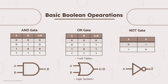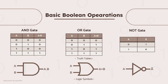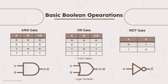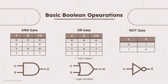Logic gates, such as AND, OR, and NOT, are the building blocks of Boolean Algebra. They perform operations on binary variables. An AND gate outputs 1 only if both inputs are 1. An OR gate outputs 1 if at least one input is 1. The NOT gate, as the name suggests, negates the input.